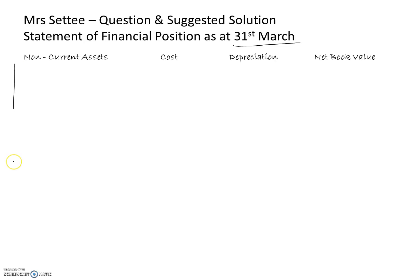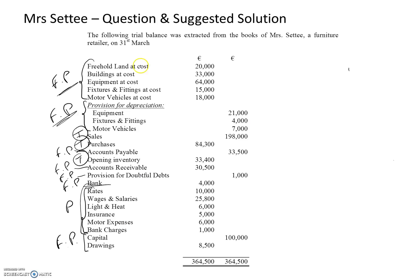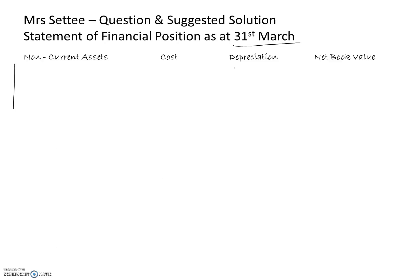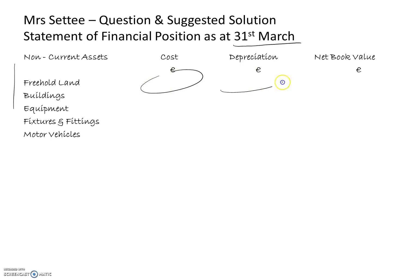We will list the non-current assets and if we look at the trial balance we can see five items that are the non-current assets, and these amounts represent the cost. So we have freehold land, buildings, equipment, fixtures and fittings, and motor vehicles. We're going to put in the cost, the depreciation, and the net book value.